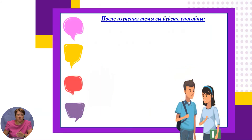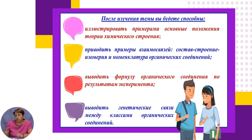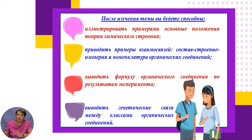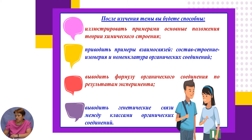After studying today's lesson topic, you will be able to independently illustrate with examples the main principles of the theory of structure of organic compounds, give examples of the relationships between composition, structure, properties, isomerism, and nomenclature of organic compounds. You will also be able to derive the formula of an organic compound from experimental results and derive genetic series between classes of organic compounds.